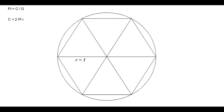Here we have a circle with a radius of 1, and therefore a diameter of 2. Based on the formula c equals 2 pi r, this makes the circumference equal to 2 pi. There is a regular hexagon inscribed inside the circle, which means that all the vertices of the hexagon touch the circle at one point. The hexagon is divided into 6 equilateral triangles, so the side of each triangle is the same as the radius of the circle. This makes the perimeter of the hexagon equal to 6, so we know that the circumference of the circle is slightly greater than 6, and therefore pi is slightly greater than 6 divided by 2, which equals 3.